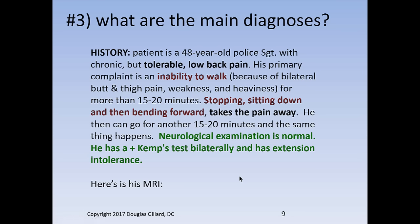Another one — true case. 48-year-old police sergeant has chronic low back pain, but tolerable. His primary complaint is he can't walk. He gets bilateral leg pain, thigh pain, numbness, weakness, heaviness. He sits down and bends forward, and the pain goes away. You should know what the diagnosis is already. He can then go another 10 or 15 minutes and the same thing happens. Neurological examination is normal. Extension intolerance — anything that goes backwards, he can't do. It hurts his back and could even reproduce symptoms in his legs, like a Kemp's test or just pure extension backwards. Here's his MRI.